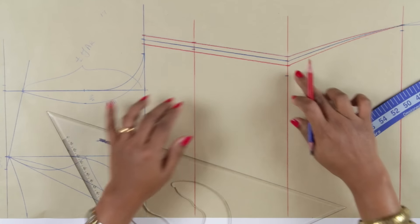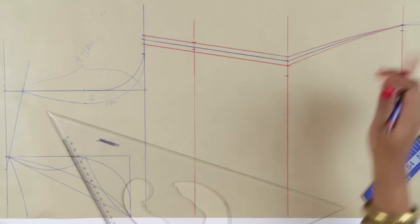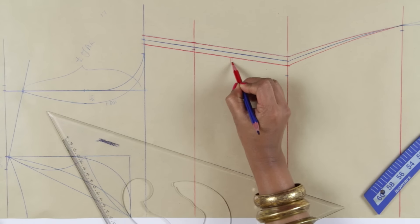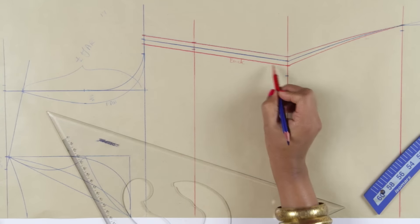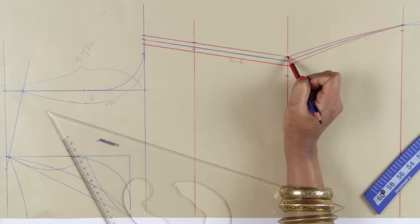All the lines will meet at the ease point on the hip line. So this will be your same line for back and the outermost line will be the same line for your front.